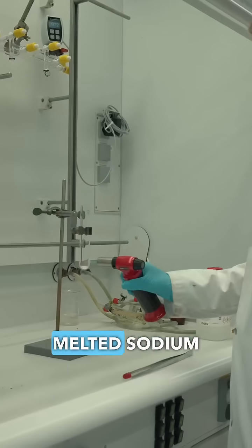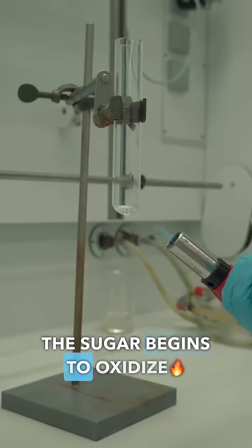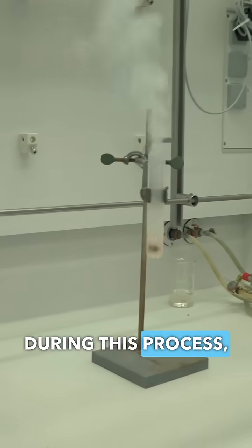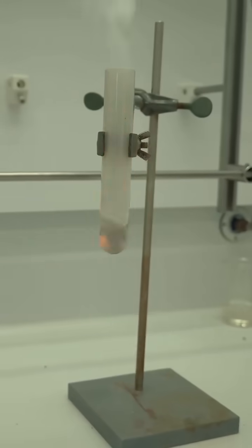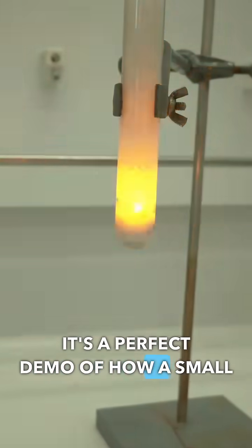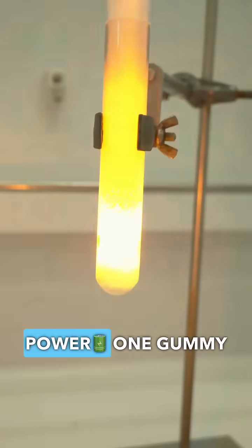When we throw a gummy bear into melted sodium chloride, the sugar begins to oxidize. During this process, carbon dioxide and water are released, producing heat and light. It's a perfect demo of how a small amount of sugar holds serious power.